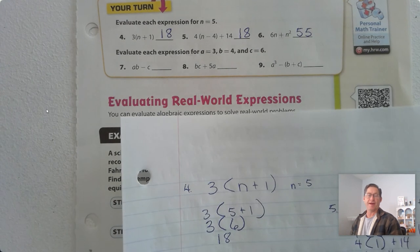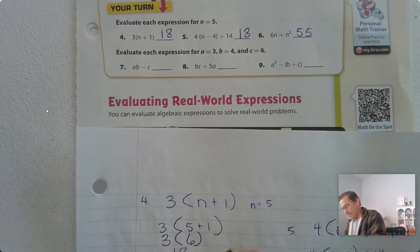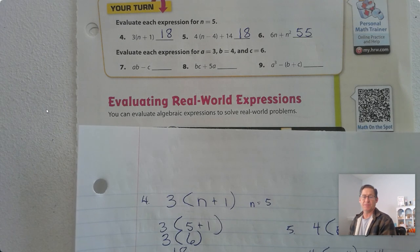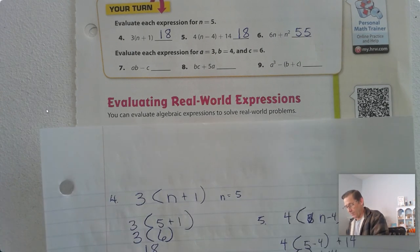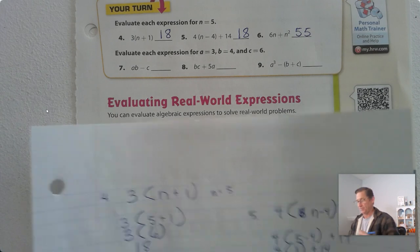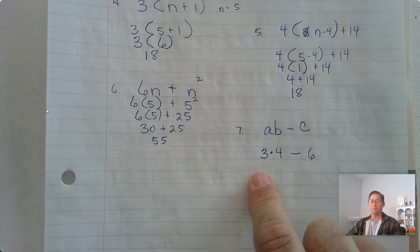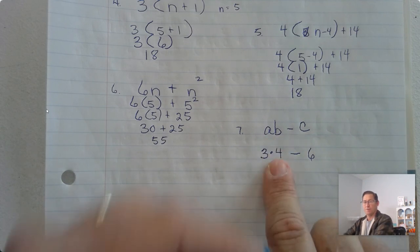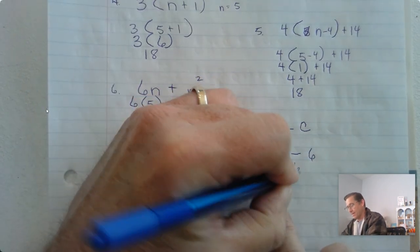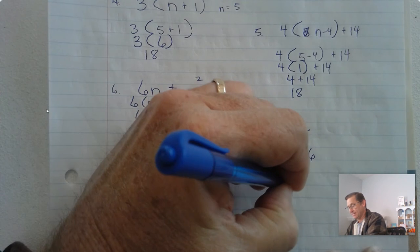Evaluate each expression for a equals 3, b equals 4, and c equals 6. Number 7: since a and b are touching each other, that means multiplication — so a times b minus c. Substitute 3 for a, 4 for b, and 6 for c. I put a dot in there so I know it's multiplication — this is not 34. So 3 times 4 minus 6. Multiplication comes first, and we're left with 12 minus 6, which is 6.